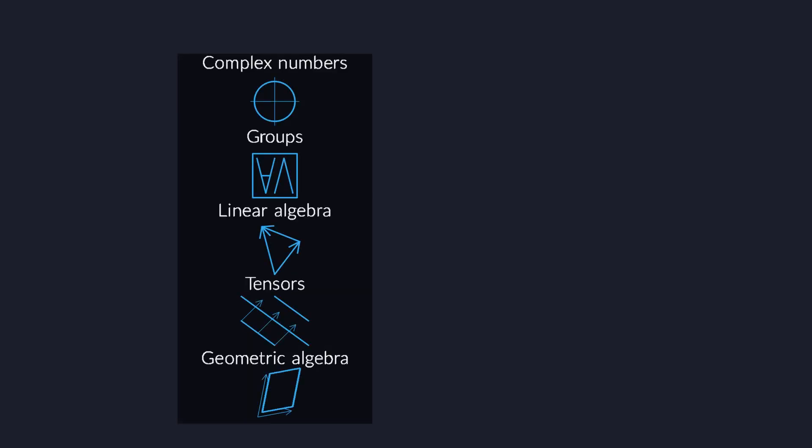We have explored a few domains of mathematics on this channel, and we're now ready to bring them together into a bigger picture. We will see how every finite group can easily be represented by a group of matrices. But first, to warm up a little bit, I want to show you how this works for complex numbers.